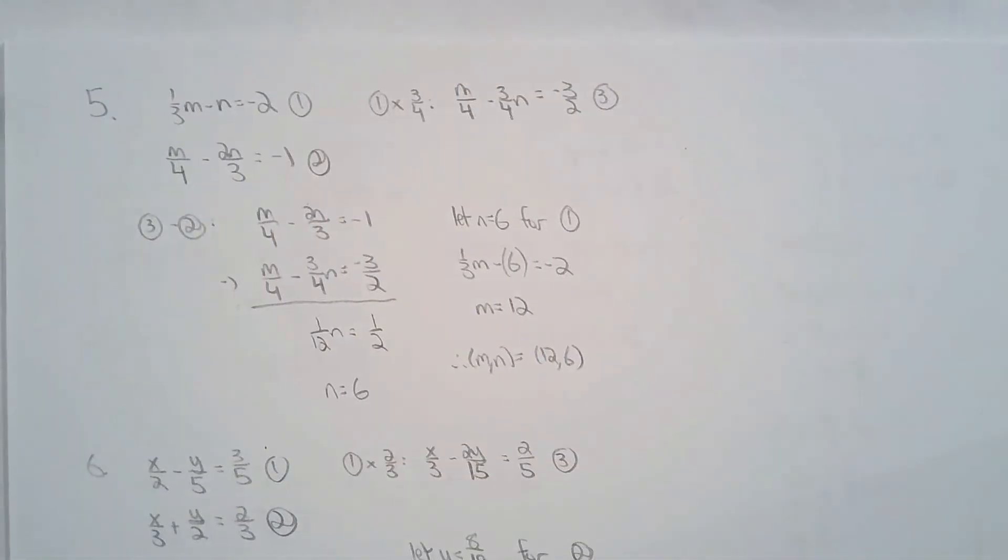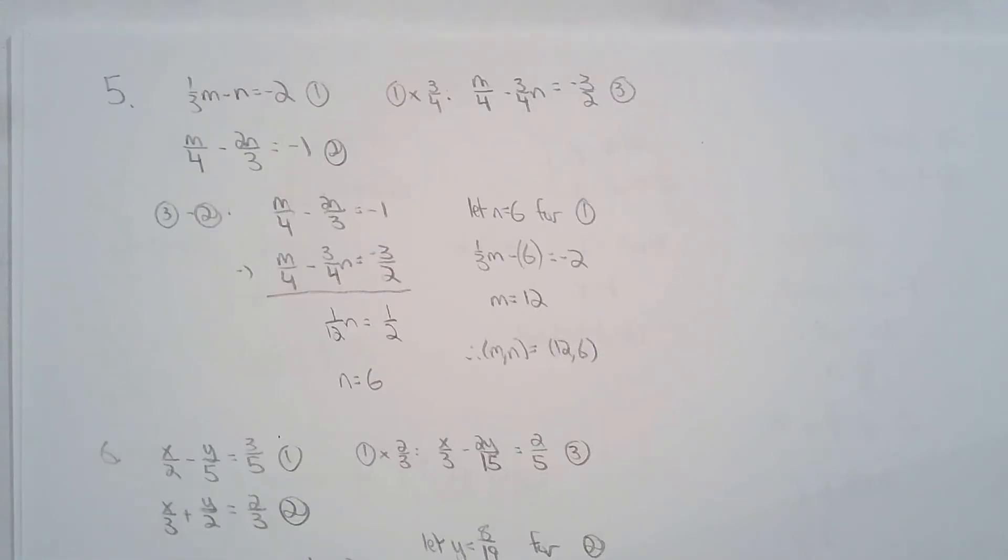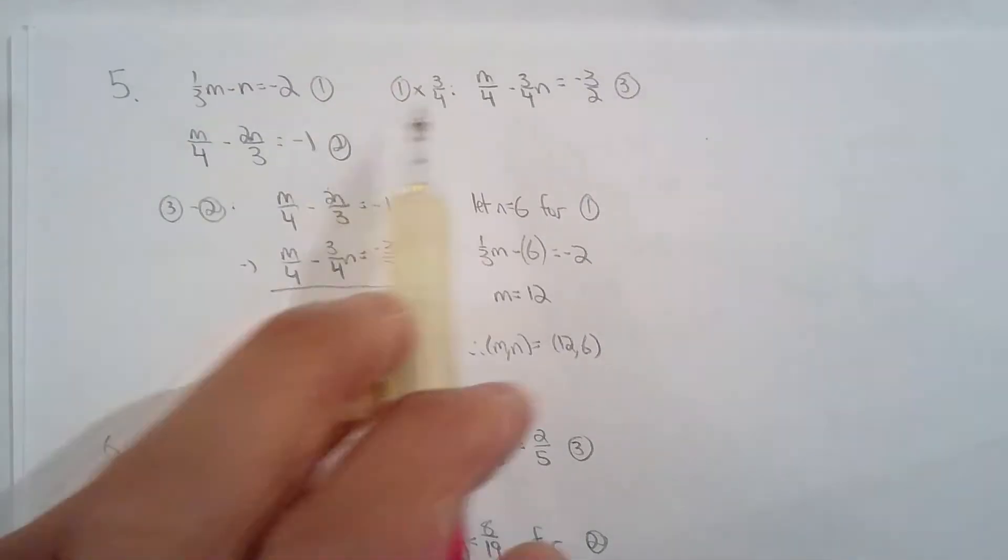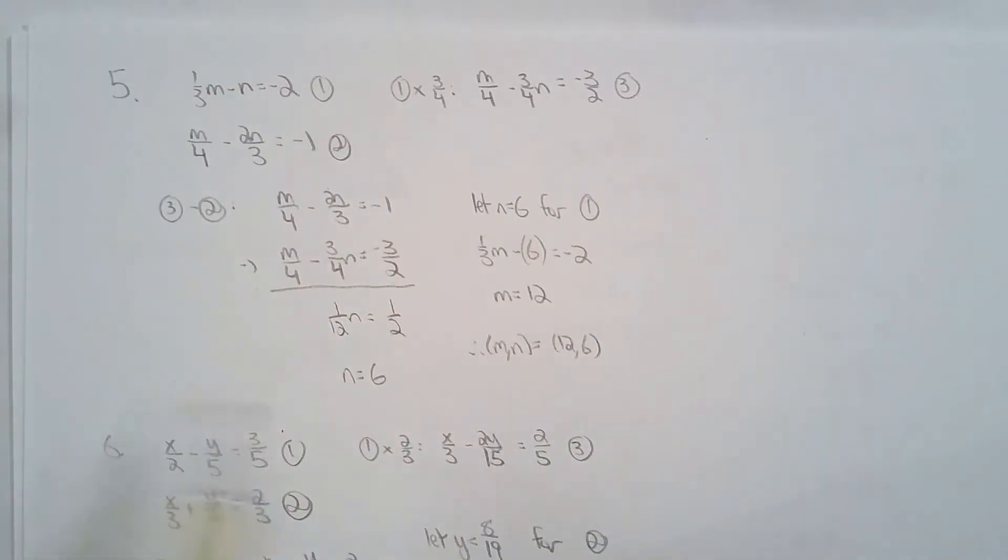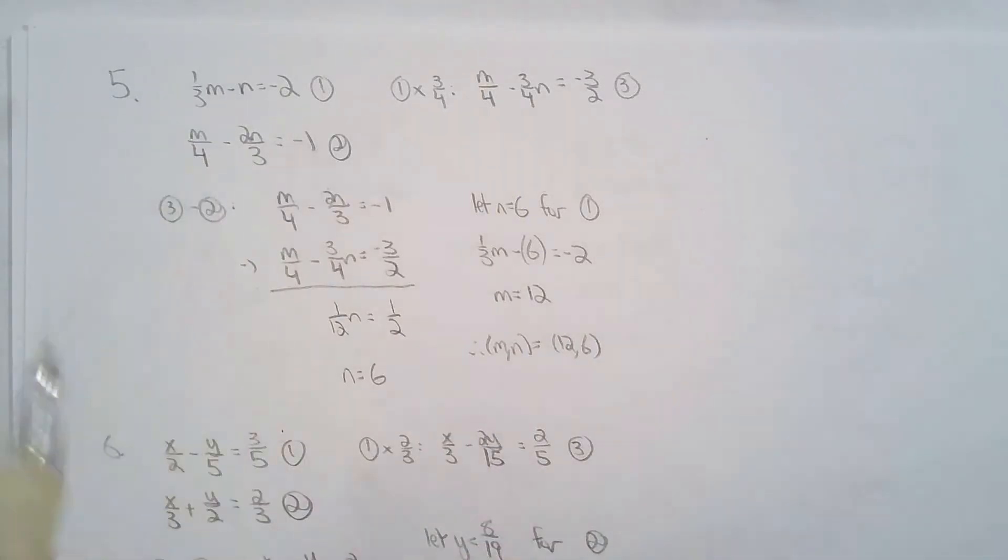For 5, I was trying to be a little fancy. So I just chose to multiply the first equation by 3 quarters. And then I can eliminate m because I have m over 4, or a quarter m, a quarter m. And I can just subtract the two equations and eliminate m and solve for n.